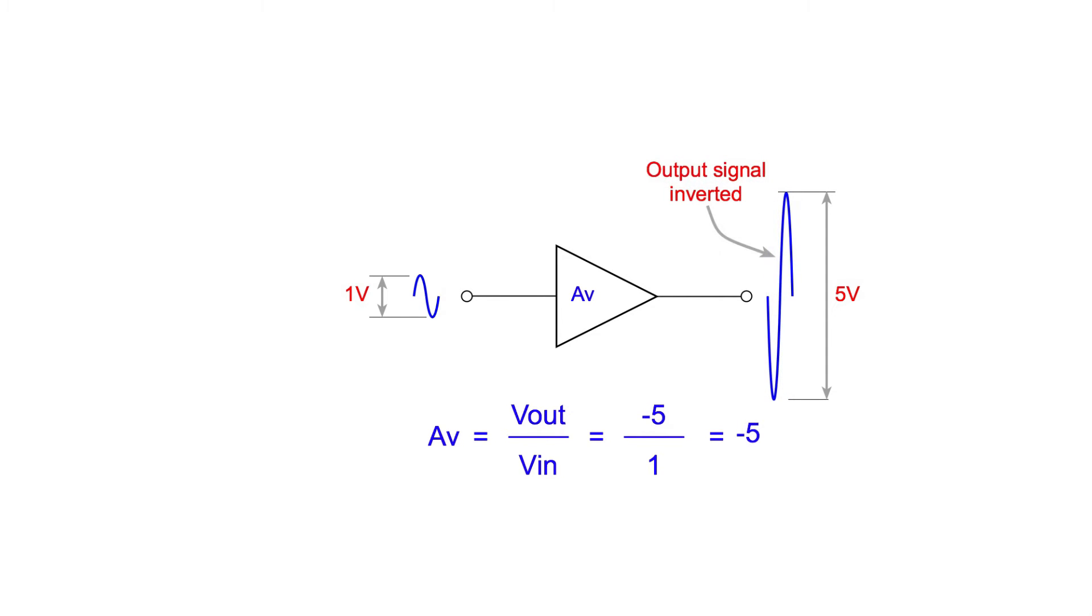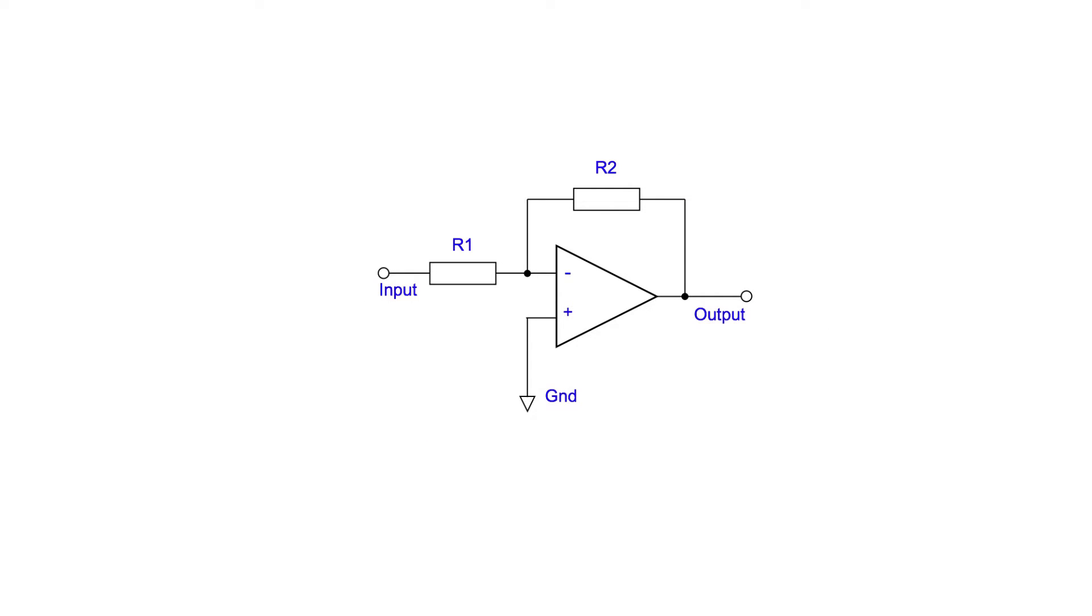In the case of the inverting amplifier we see a voltage of minus 5 volts for a 1 volt input so the gain is minus 5. Here we see the circuit configuration for the inverting amplifier. It has two resistors connected to the op amp chip. R1 is connected to the inverting input. The non-inverting input is connected to ground and R2 provides a feedback path between the output and the input.